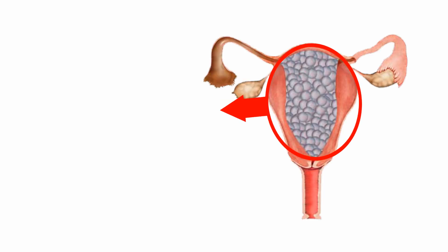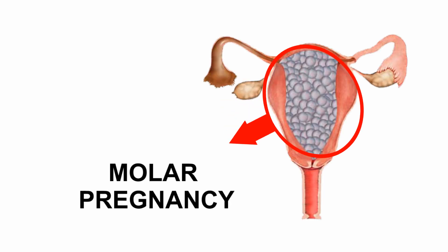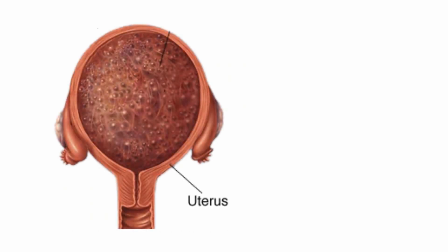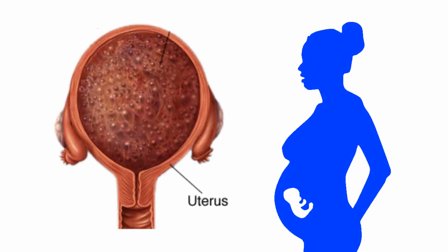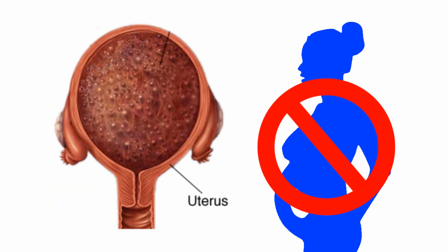A molar pregnancy is a tumor that can develop in the uterus in the beginning of the pregnancy. If women don't treat this problem, a molar pregnancy can be serious to a woman. Most of the time this problem destroys the early pregnancy.